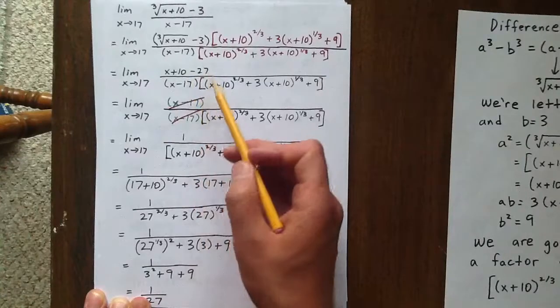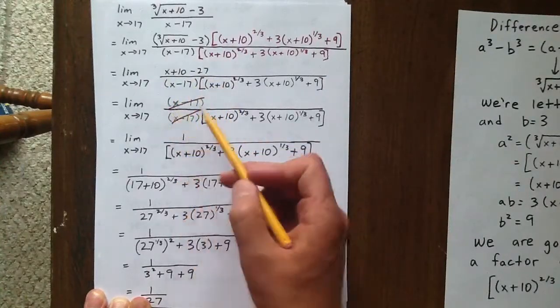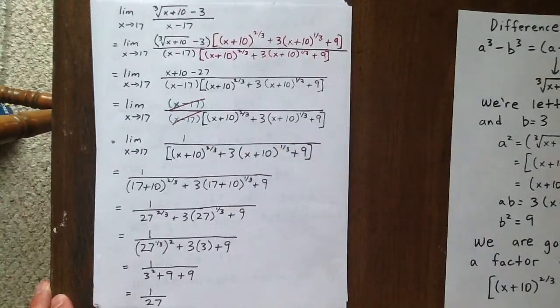Well, x plus 10 minus 27 simplifies to x minus 17. So we have our offending factor in both the numerator and denominator.